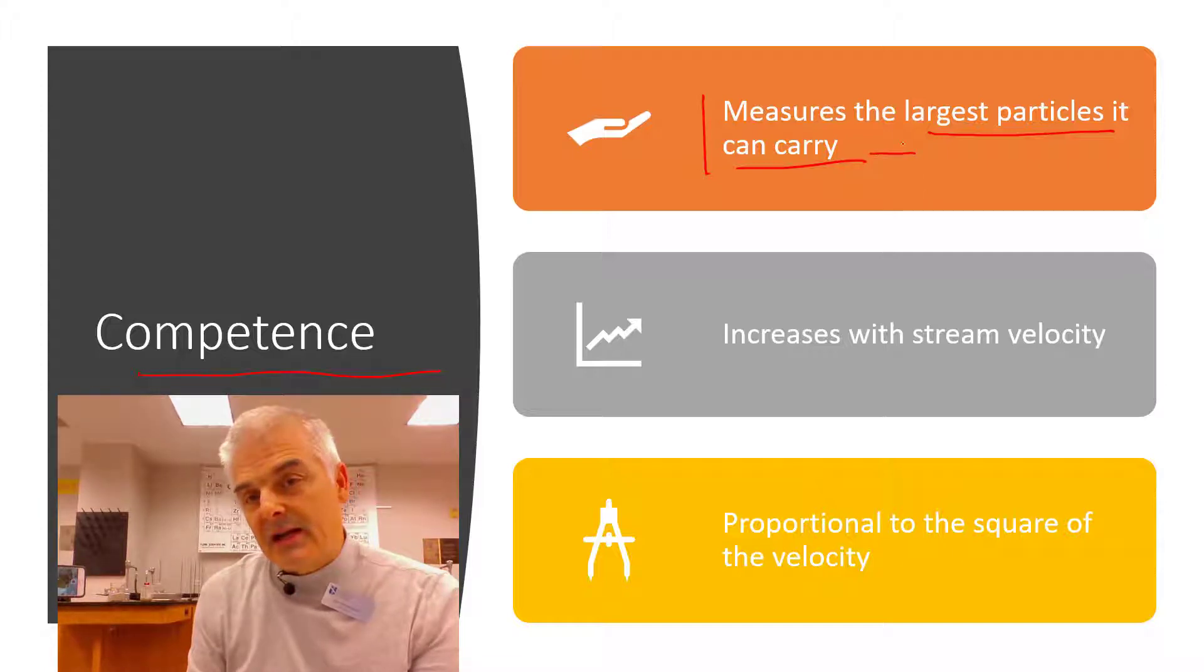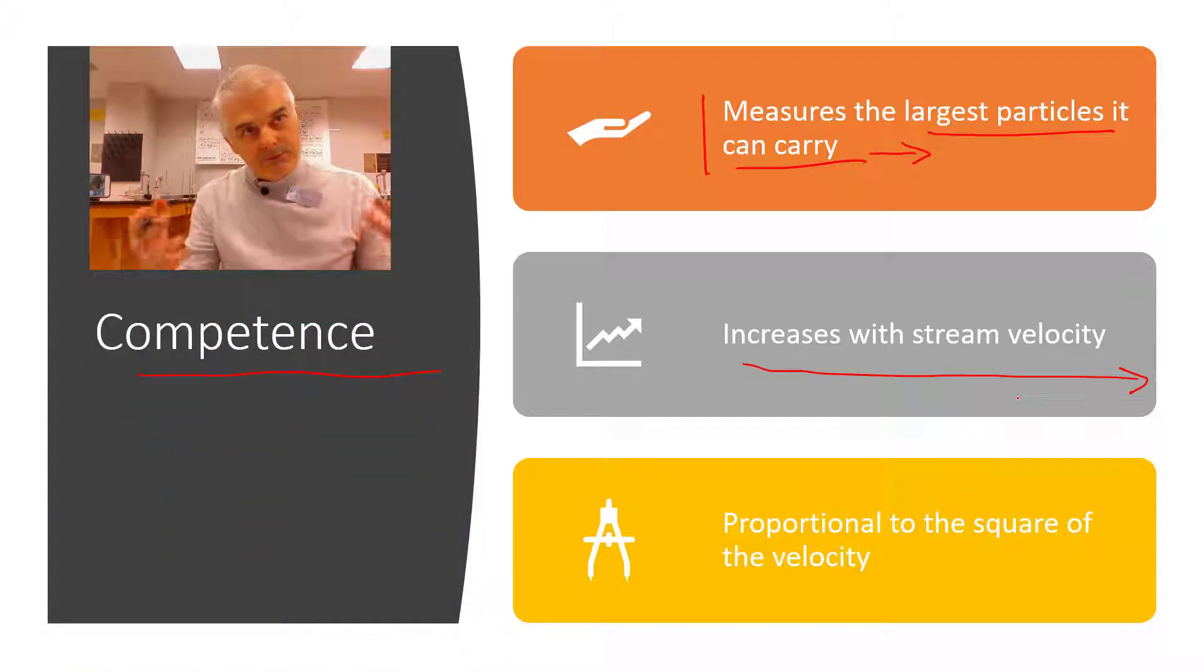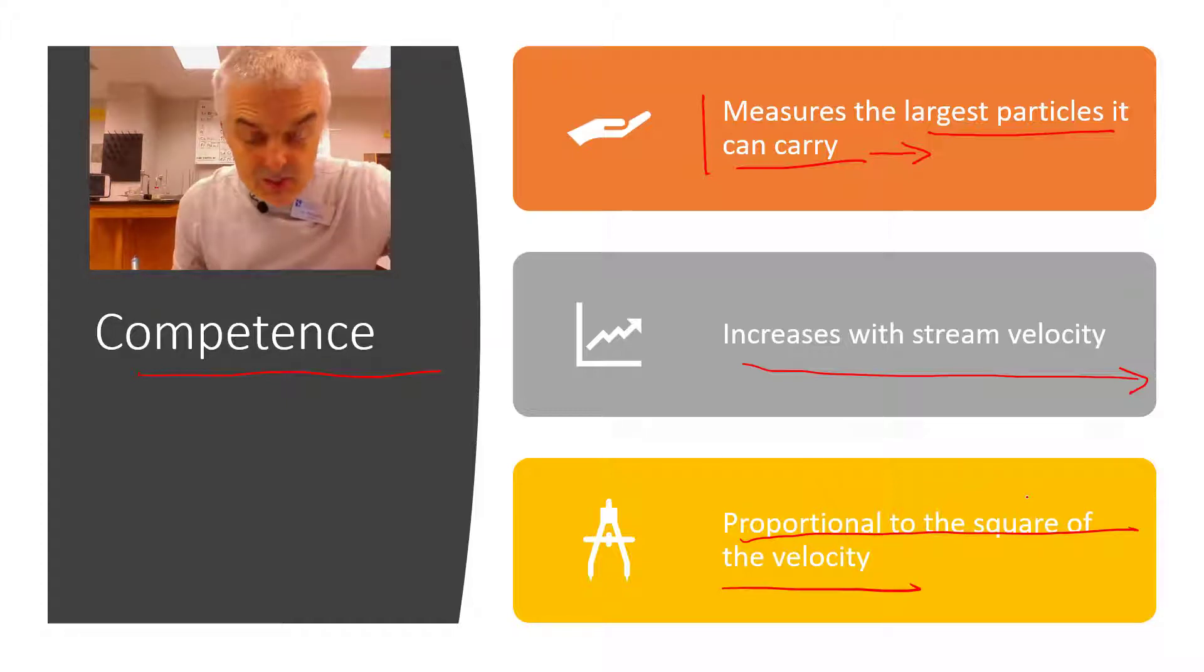Now the faster the speed of the river, the larger the boulder or whatever, the substance it can bring down. And it's interesting that it's proportional to the square of the velocity. And this has been mathy, but it's really cool. So if I were to double, let's think about this. If I double the stream velocity, the velocity of the stream, what's going to happen is it will quadruple or times four the competence.